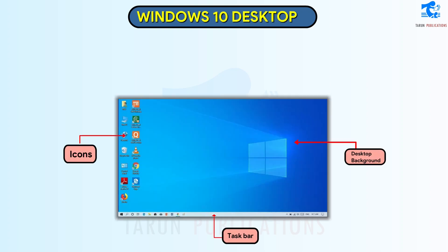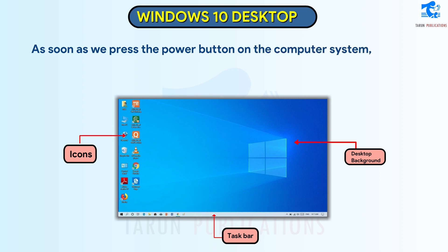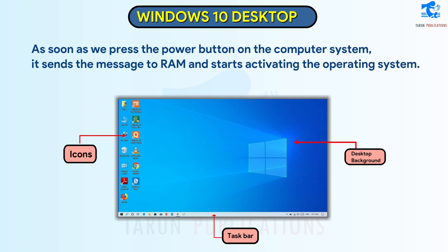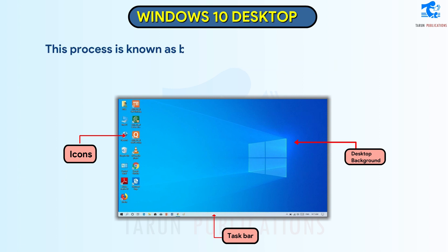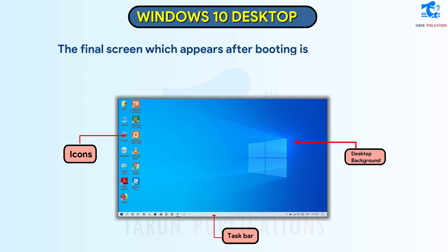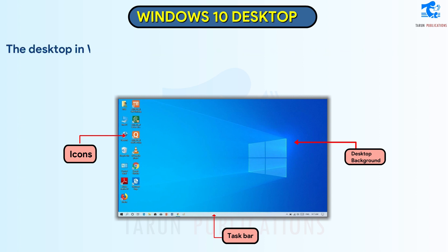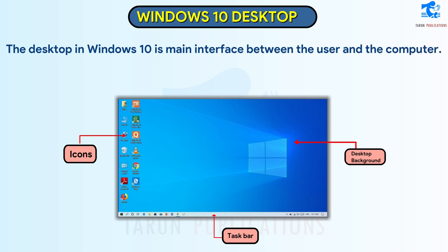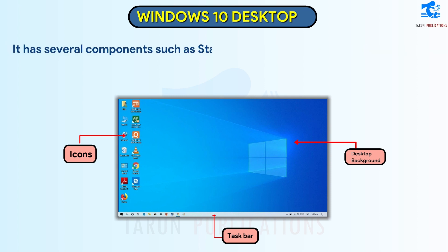Windows 10 Desktop. As soon as we press the power button on the computer system, it sends the message to RAM and starts activating the operating system. This process is known as booting. The Windows Welcome screen appears when the operating system is still activating. The final screen which appears after booting is the Desktop. The Desktop in Windows 10 is the main interface between the user and the computer. It has several components such as Start Menu, Taskbar, Background, and Icons.